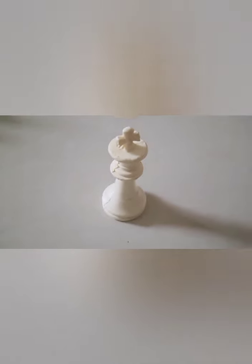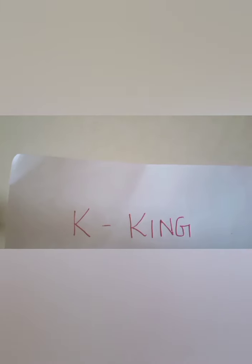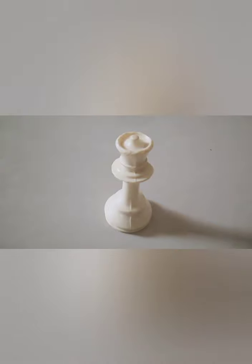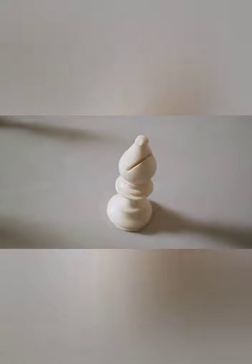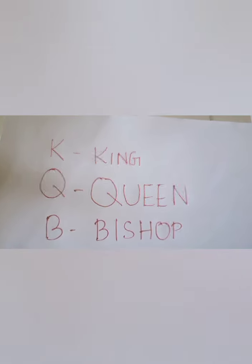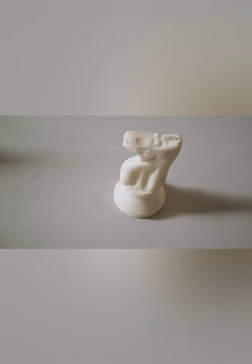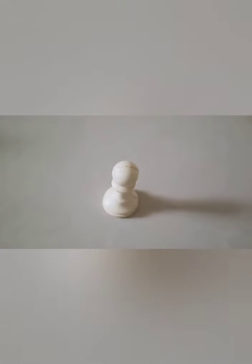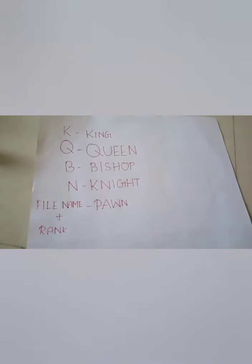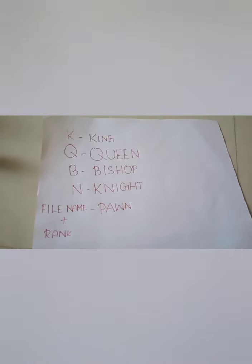Now we are moving to our next part — how to name a square in which these pieces have been placed. Each and every piece has a notation. King — the notation for king is K. Queen — the notation for queen is Q. Bishop — the notation for bishop is B. Knight — the notation for knight is N. The notation for the pawn is the file name plus rank.